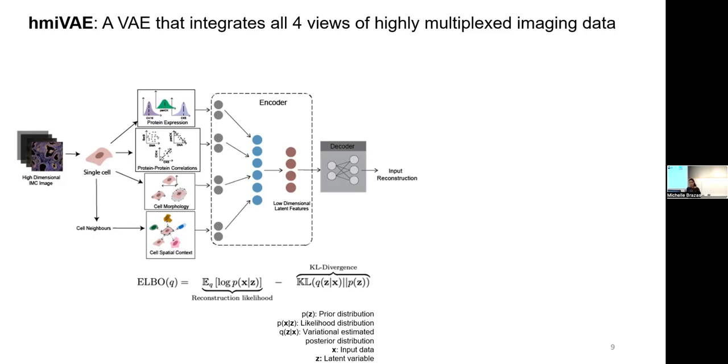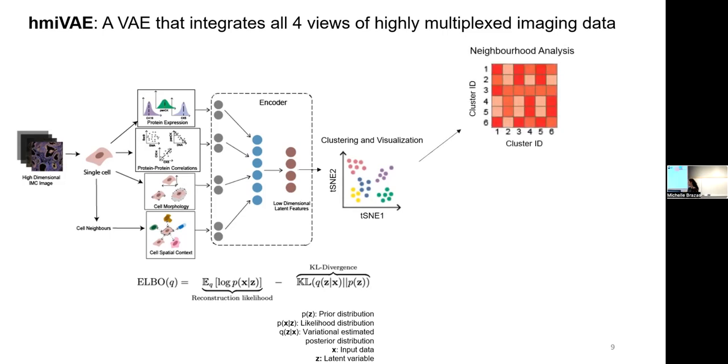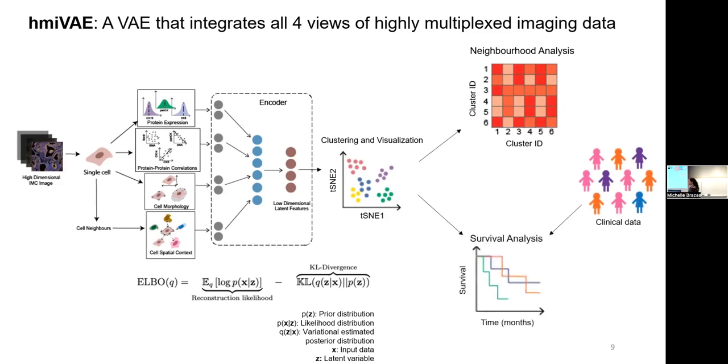And so once we've learned a latent space that we're fairly happy with, I can use these lower dimensional latent features to then cluster and visualize the cells, but I can take it a step further. I can place them back into the tissue and do some neighborhood enrichment analysis to see, are some of the clusters enriched for others, depleted for some? And where clinical data is available, I can combine them with that data to figure out whether any of the clusters that I've identified carry any prognostic potential.